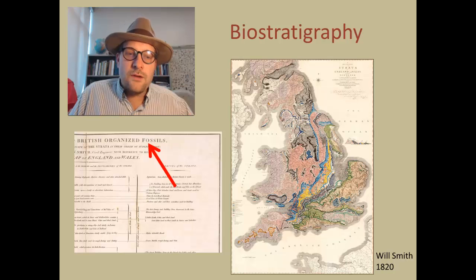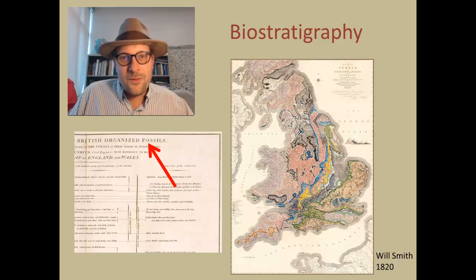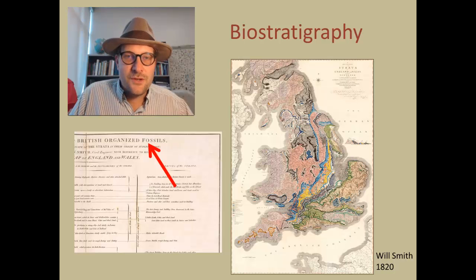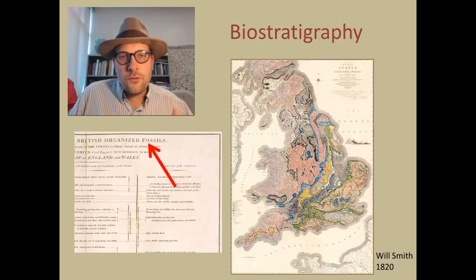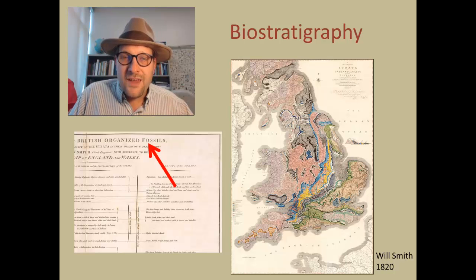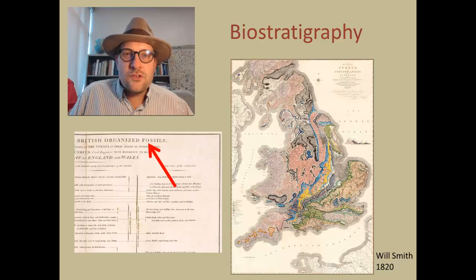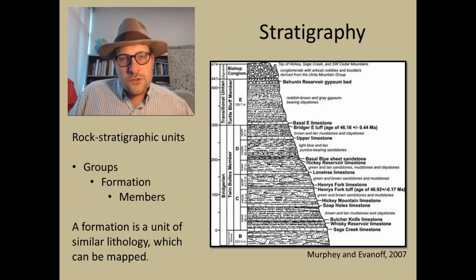If you zoom in, you can see that William Smith, back in the 1820s — 39 years before Darwin published the Origin of Species — divided up the rocks based on fossils. Geologists realized that as you move from one rock to another, the characteristics of the rocks and the fossils you find in them change fundamentally.